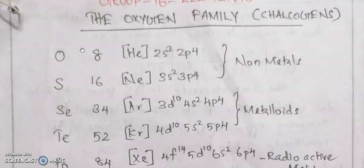Selenium's configuration is [Ar] 3d¹⁰ 4s² 4p⁴. Tellurium's configuration is [Kr] 4d¹⁰ 5s² 5p⁴. Polonium has atomic number 84 with configuration [Xe] 4f¹⁴ 5d¹⁰ 6s² 6p⁴. Polonium is a radioactive metal; selenium and tellurium are metalloids; oxygen and sulfur are non-metals.